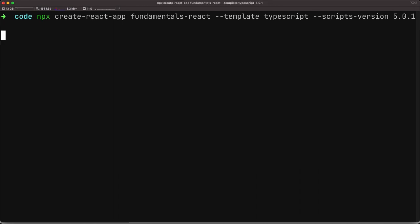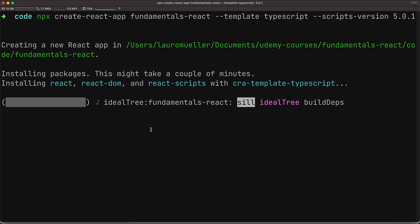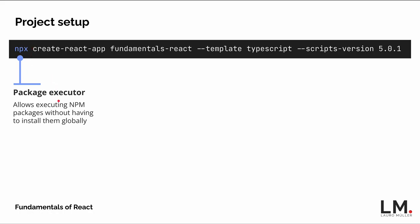The first part, npx, is our package executor, available in npm version 6 and later. Before that, we would have to install the package globally to run binaries locally. With npx, we don't need to install packages globally — we just execute npx with the package we want, and it performs installation and executes the binary without requiring a global install. This frees us from being bound to a specific version — if in another project we want to execute the command in a different version, we don't have to override the globally installed version, which could lead to conflicts.